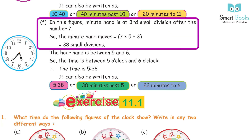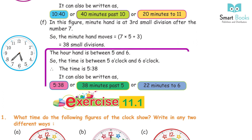F: In this figure, the minute hand is at the 3rd small division after the number 7. So the minute hand has moved 7 × 5 + 3 = 38 small divisions. The hour hand is between 5 and 6. So the time is between 5 o'clock and 6 o'clock. The time is 5:38. It can also be written as 5:38, 38 minutes past 5, or 22 minutes to 6.